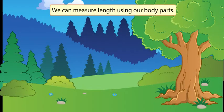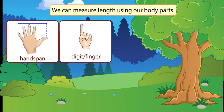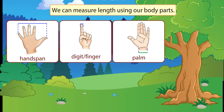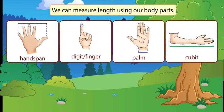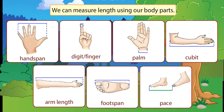We can measure length using our body parts: handspan, digit or finger, palm, cubit, arm length, foot span, pace.